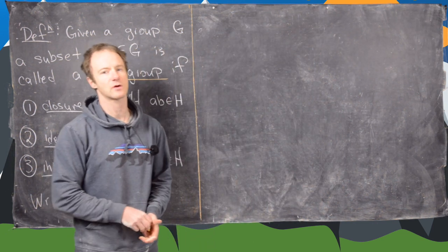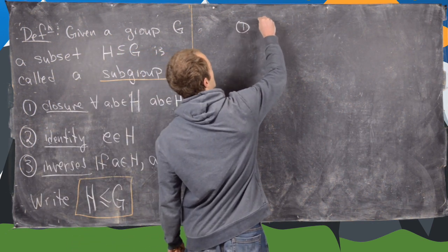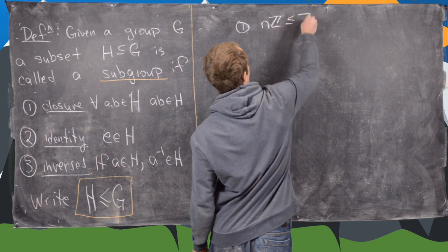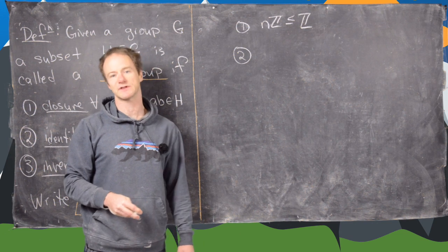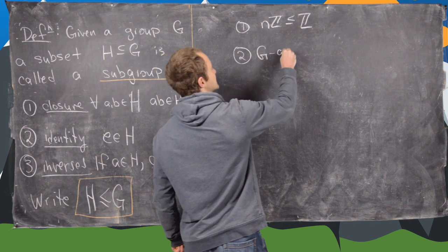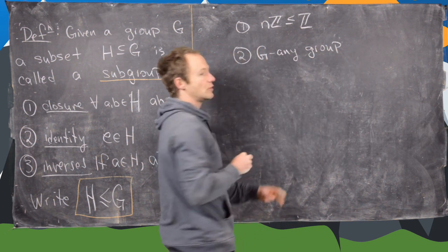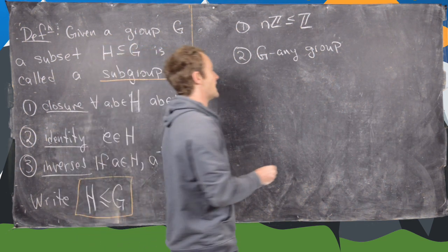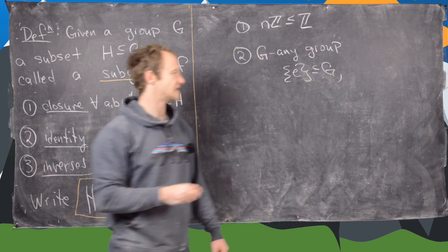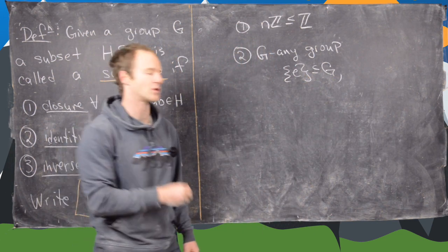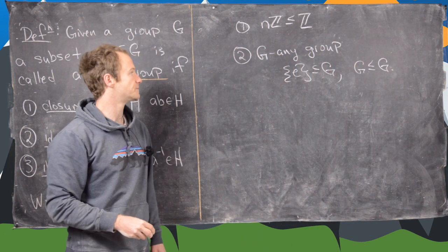Now that we've classified all subgroups of ℤ — all subgroups of ℤ are of the form nℤ — let's give some other examples of subgroups. For any group G, there are always two subgroups: the trivial subgroup, containing only the identity, and the whole group itself, which is also a subgroup.